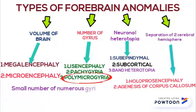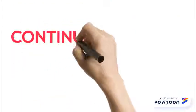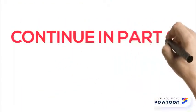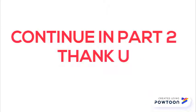Polymicrogyria means a small number of numerous gyri. It is usually due to focal brain injury, and the treatment is hemispherectomy, as it usually involves a focal area. This video is a continuing part two — thank you.